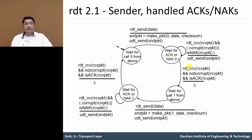Suppose the packet is received correctly at the receiving side — the packet is not corrupted and the acknowledgement is correct — then no action needs to be taken and the state changes. Now in case the acknowledgement packet is corrupted, meaning the packet was received properly but the acknowledgement packet is corrupted or is a negative acknowledgement, then it retransmits the last packet to the receiver.